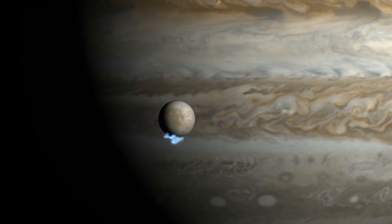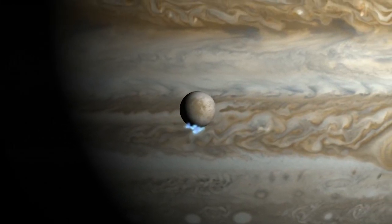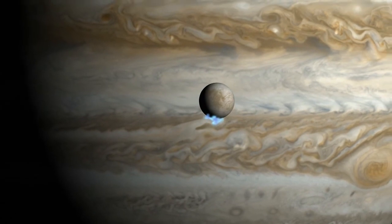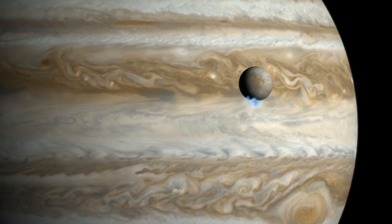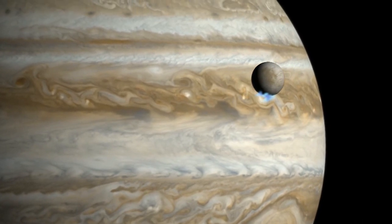In 2013, Hubble provided the first observational evidence of water vapour erupting from the frigid surface of Jupiter's Moon Europa near its South Pole.